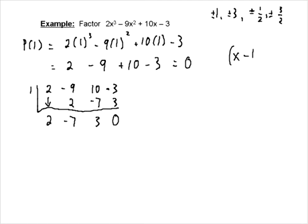Because plus 1 worked, x minus 1 is the factor. So that means we have x minus 1. And again, these tell you the coefficients of the new quadratic. It was cubic, it drops down 1 degree. 2x squared minus 7x plus 3.